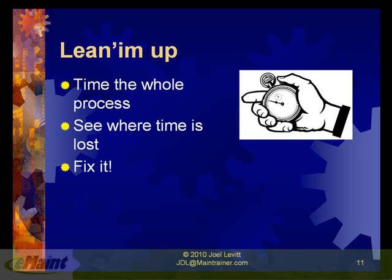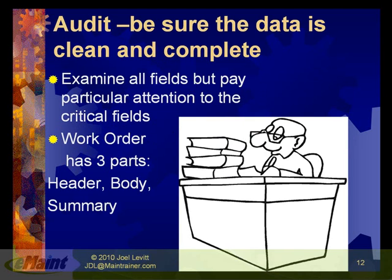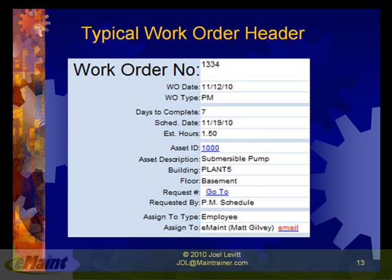See how long it takes different people, because some people may need some help putting it in. The next thing I recommend — this is for really leaning up and making the data much, much more valuable — is to audit your work orders. Randomly generate some number of work orders. Pick random numbers over the last 12 months: 50 of them, 50 closed work orders.